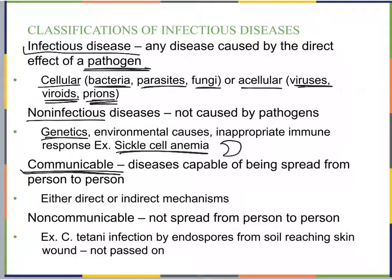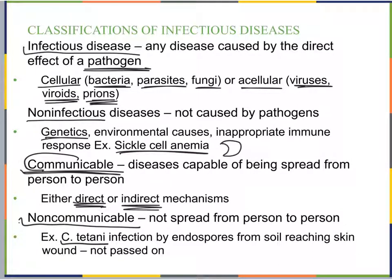A communicable disease is capable of being spread from person to person, either by direct or indirect mechanisms. A non-communicable disease cannot be spread person to person — for example, Clostridium tetani infection (tetanus), where endospores from soil enter through a skin wound. You cannot pass tetanus from person to person; you have to acquire it from the soil.